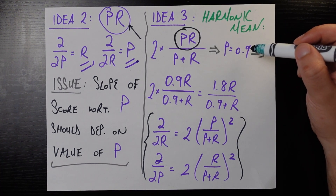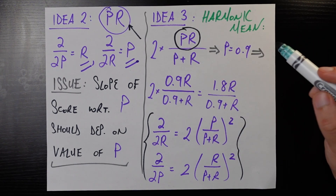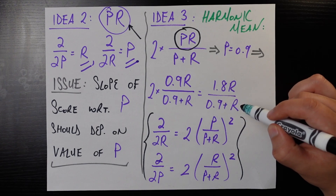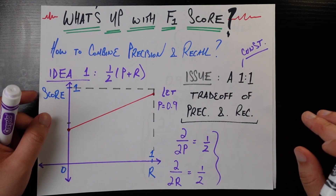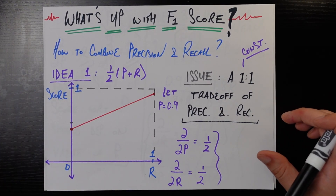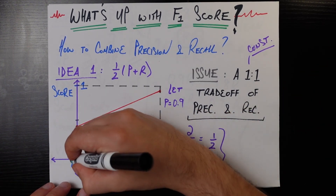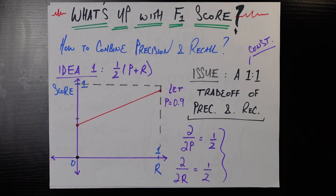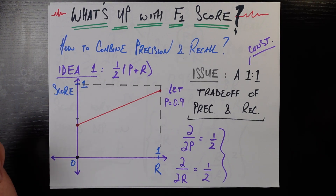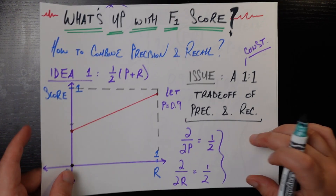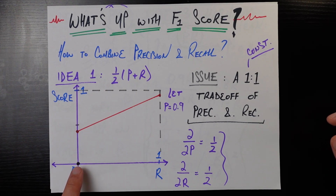Let's set precision to 0.9, just as we did with idea one. Working out the math, the tentative score becomes 1.8 times recall over 0.9 plus recall. Plotting this, if we plug in recall equals 0 we get zero — which solves one of the big issues with idea one. Even with a very good precision of 0.9, having zero recall means this success metric gives us a zero score. It completely punishes that situation, which is exactly what we want.